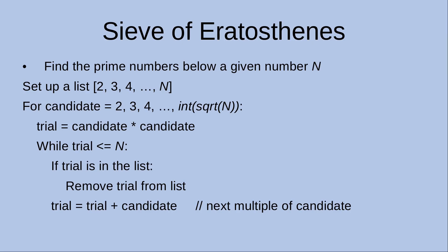Then I want to set the trial number equal to the square of the candidate number. While the trial number is not larger than n, if the trial number is still in the list, we simply remove it from the list. Then outside the if statement, we update the trial number by increasing it with the candidate number, to get the next multiple of the candidate to be tested.